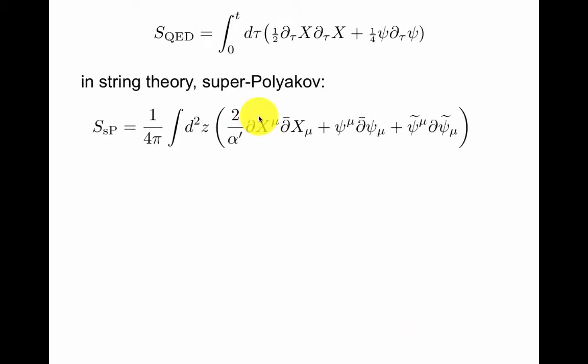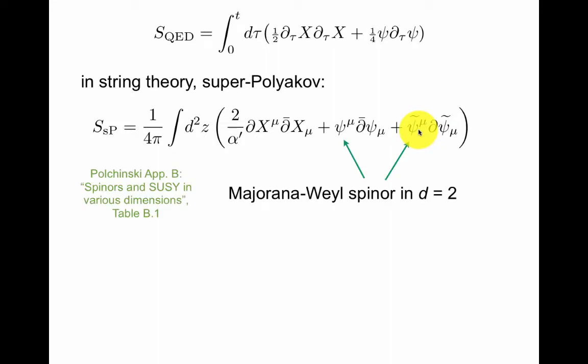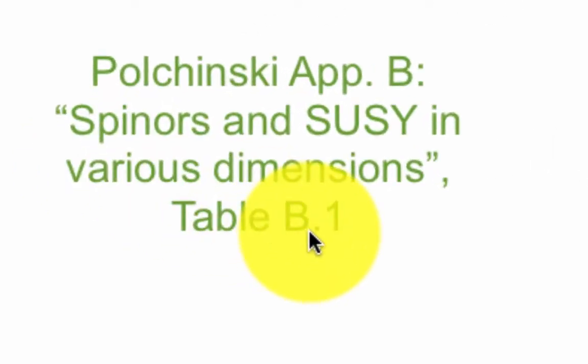So we take the usual Polyakov action, we put the alpha here that was outside before, now we put it here, so we can easily add these worldsheet fermions. They're free. So we can add one psi of z and one psi tilde of z bar, as we will see. Now these are actually single component. Let's try to understand that. You might want to pause and take a look at this appendix. It's a nice explanation, especially look in table B1 where he lists spinor representations in various dimensions.